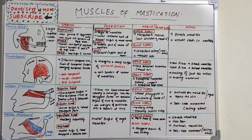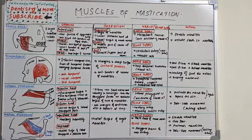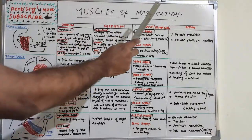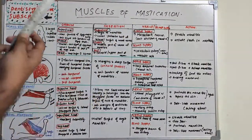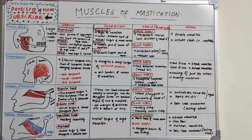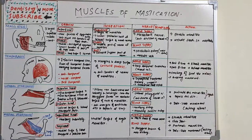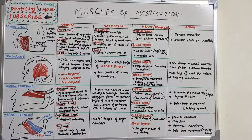We start with the primary muscles of mastication: masseter, temporalis, lateral pterygoid, and medial pterygoid. We'll study each under four headings — origin, insertion, nerve supply and blood supply, venous drainage, and basic actions. The word masseter in Greek means 'a chewer.' It is a powerful muscle which helps in mastication.